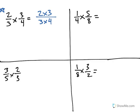So this answer would be 2 times 3 is 6, 3 times 4 is 12, for an answer of 6 twelfths. If you want to simplify that, you get 1 half.